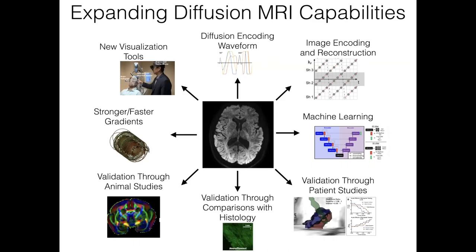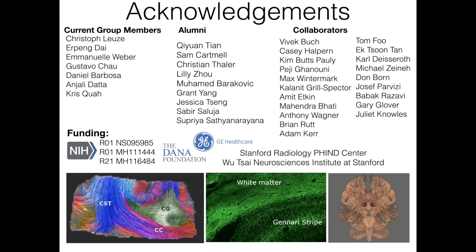I didn't cover everything here, but these are the different flavors of diffusion imaging and ways we're working to expand capabilities — from diffusion encoding waveforms and imaging reconstruction, to validation and hardware developments. It's a great opportunity to have presented this to you, and it's an amazing team of current and former group members and collaborators. Thank you to all the funding sources.